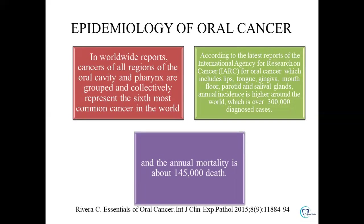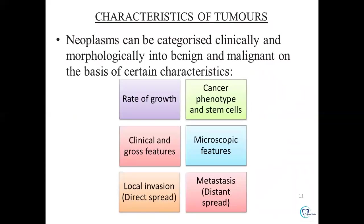When we talk about the epidemiology of cancer, it is the sixth most common cancer in the world. The most common sites involved include lips, tongue, gingiva, mouth, parotid, and other salivary glands. The death rate is about 145,000 per year. Neoplasms can be broadly categorized clinically and morphologically into benign and malignant based on rate of growth, cancer phenotype, clinical and gross appearance, microscopic features, and invasion and metastasis — which is a cardinal sign for malignancy.